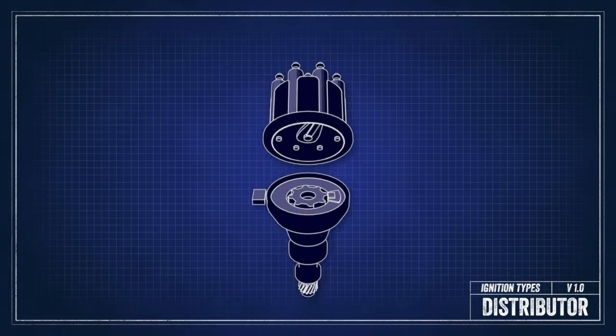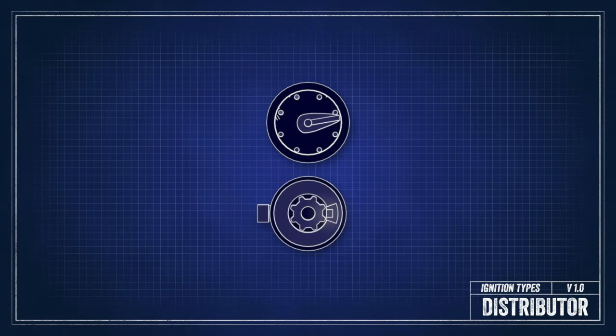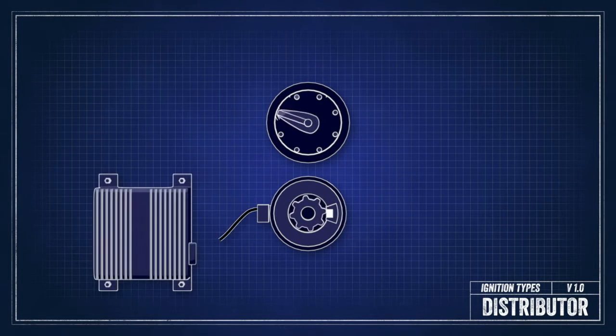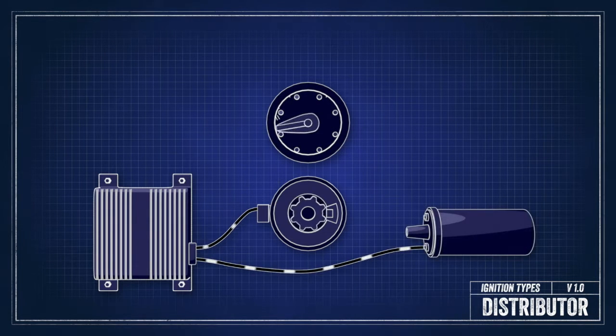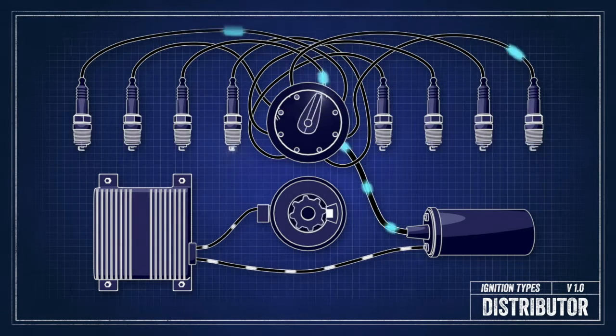First, we're going to talk about an electronic distributor and single ignition coil. A modern electronic distributor has either a hall effect or an optical sensor, and that's going to tell the computer how fast the engine is spinning and where it is in the cycle. The computer will take that information and deliver a spark at the proper time from the coil through the distributor to each cylinder. This is a simple and usually cost-effective system, but it has a lot of moving parts and does not allow for as much timing control as other systems.